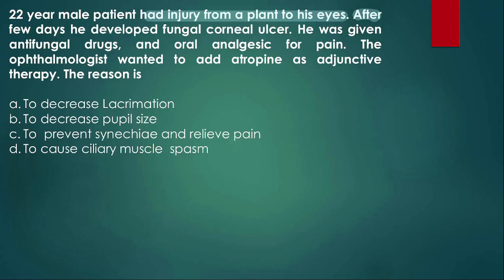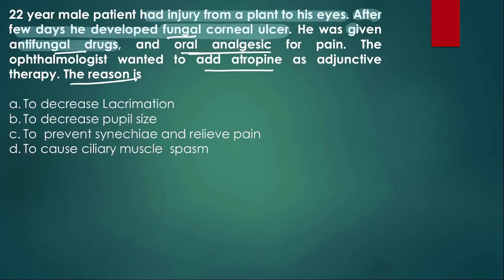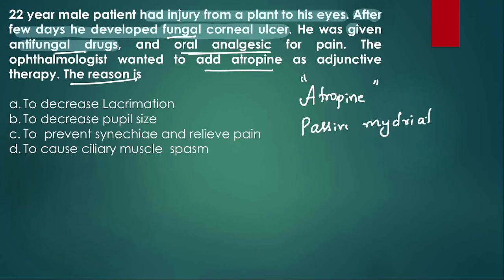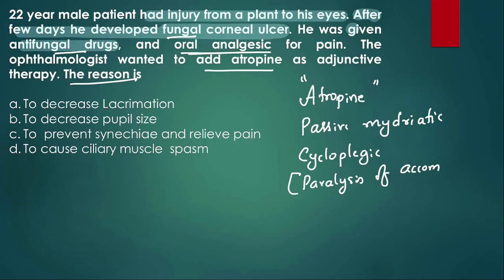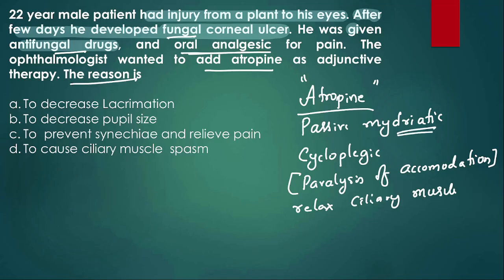The patient was given anti-fungal drugs. The ophthalmologist wanted to add atropine as adjunctive therapy. Atropine is a mydriatic drug and also a cycloplegic drug, meaning it causes paralysis of accommodation by relaxing the ciliary muscle and causes dilation of the pupil.